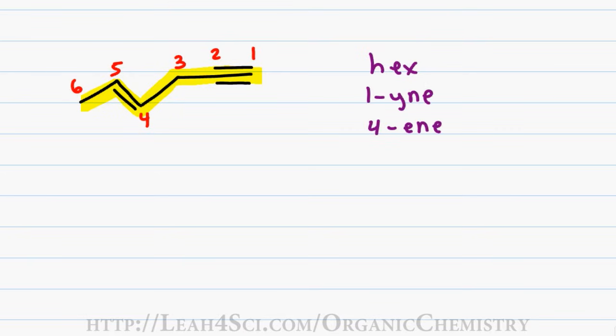In this case, even though the triple bond has higher priority for numbering, E comes before Y and so ene still comes before yne in the name, and so the molecule is named hex-4-ene-1-yne.